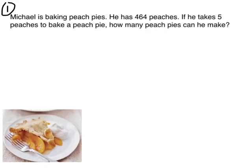Let's look at our first word problem. Michael is baking peach pies. He has 464 peaches. If he takes five peaches to bake a peach pie, how many peach pies can he make? So I need to split 464 peaches into five equal groups.